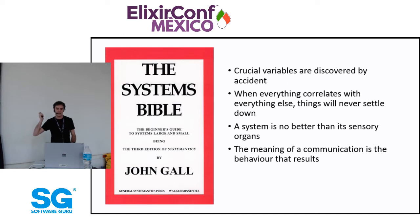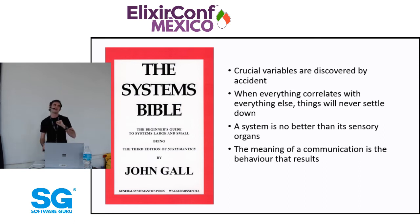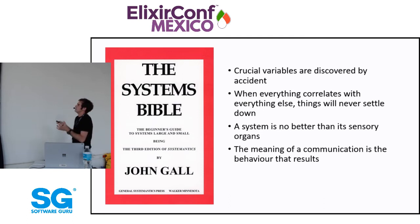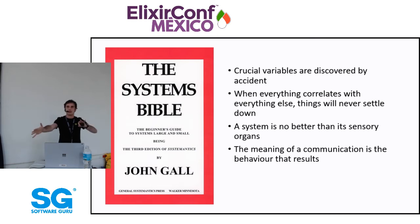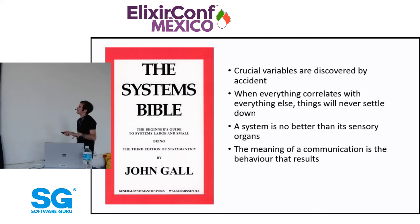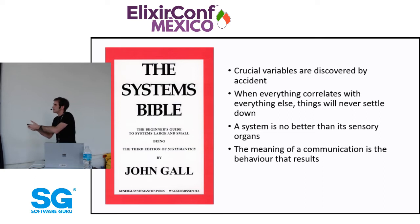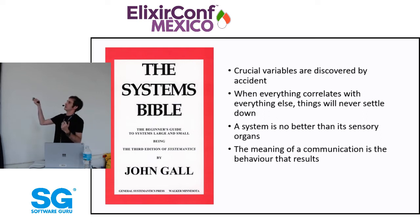When everything else correlates with everything else, things will never settle down. In the context of the book, if you take a corrective action somewhere in the system and then everything changes and you don't know if what you did had any effect, you'll be able to do nothing else. In the vision of metrics and logs, if you've seen a dashboard with 500 different metrics about response times across all services, you end up not knowing what stands for what, what causes what, what is the consequence of something. At that point you're just looking at numbers and trying to gain insights from nothing.